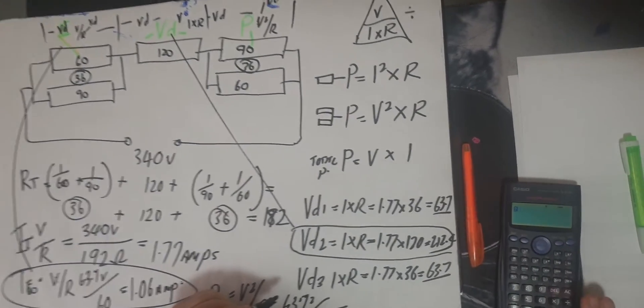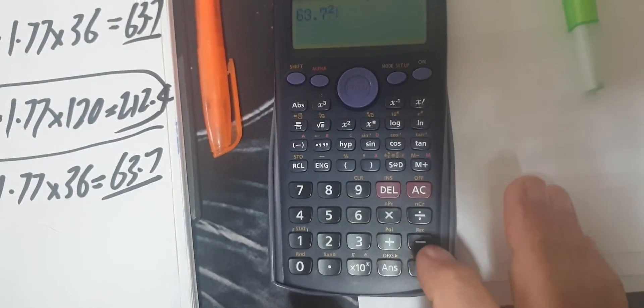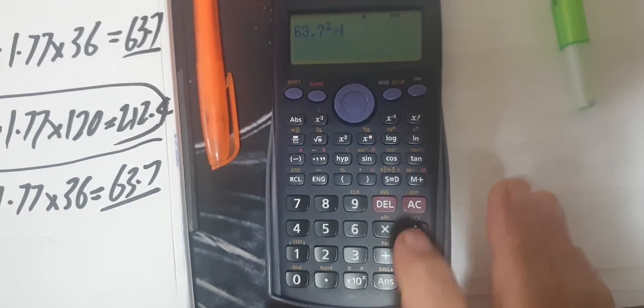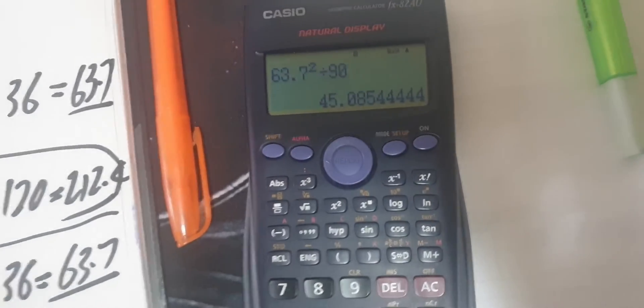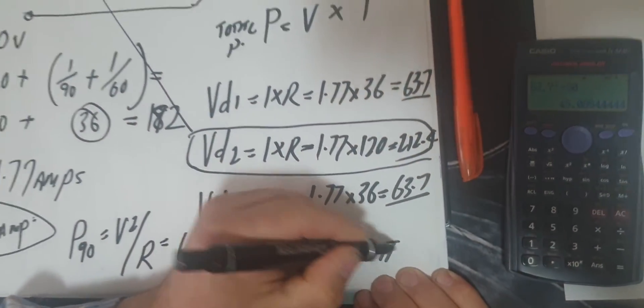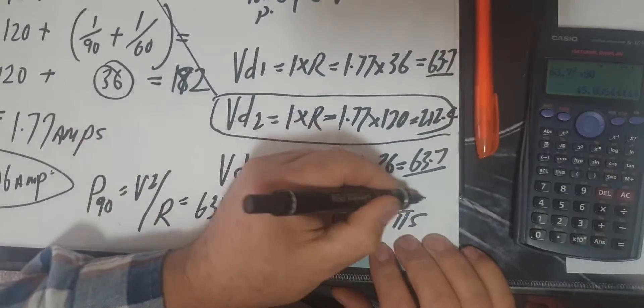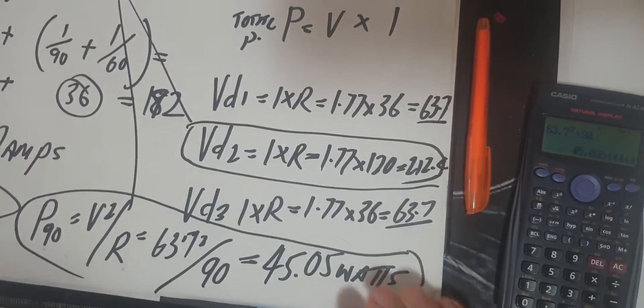63.7 squared, divided by 90. And what have we got? 45.05 watts. It's not current or voltage. So this one here is what we get for the third one. So there you go.